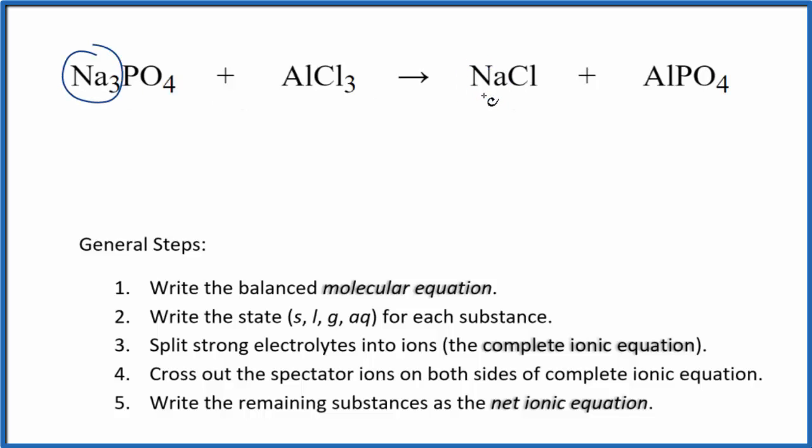So I'll put a 3 in front of the NaCl that gives me three sodiums, three chlorines. I have three chlorines here, one aluminum, and then I have a phosphate and a phosphate. So that's it, this is the balanced molecular equation.